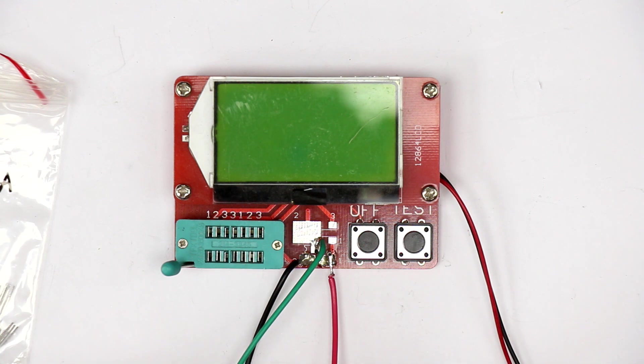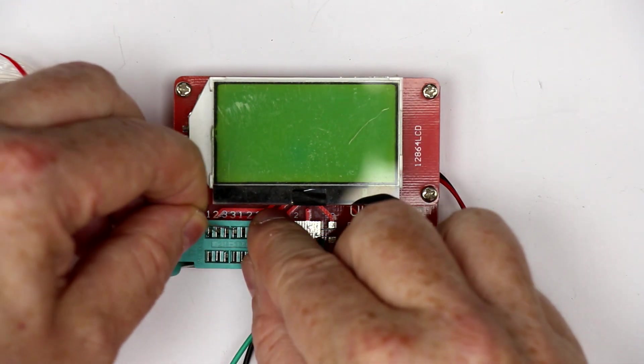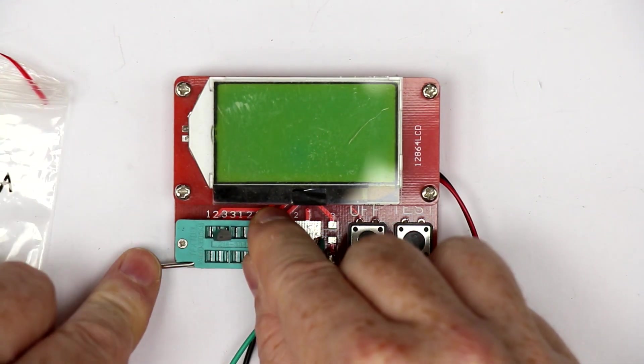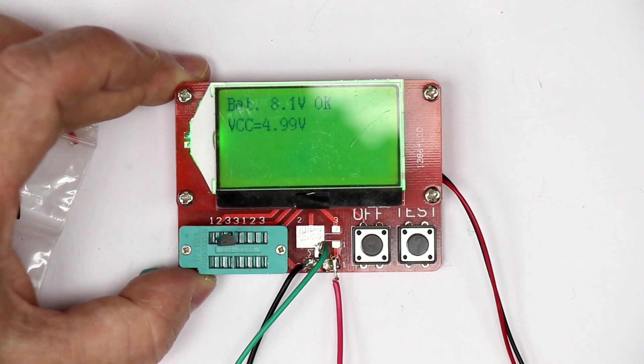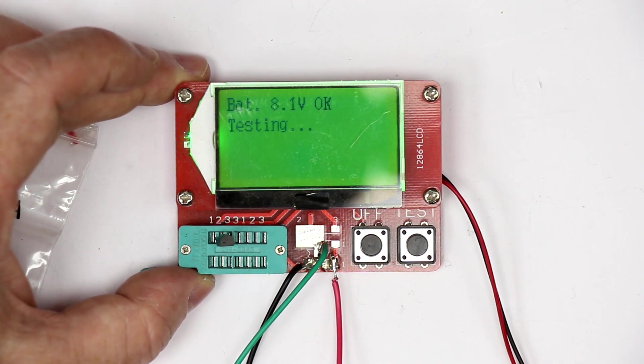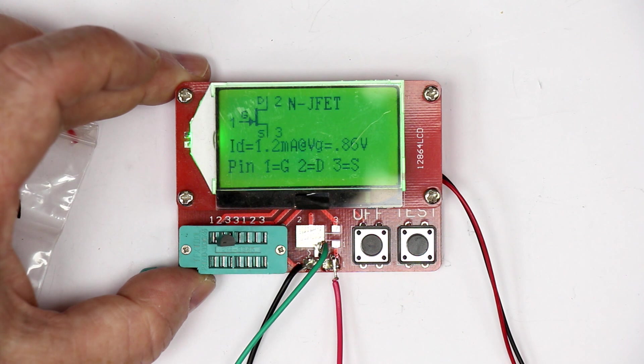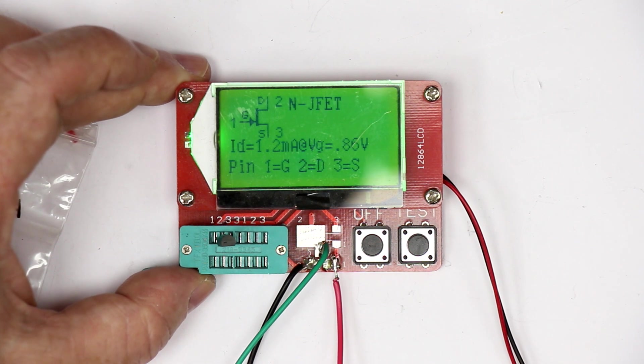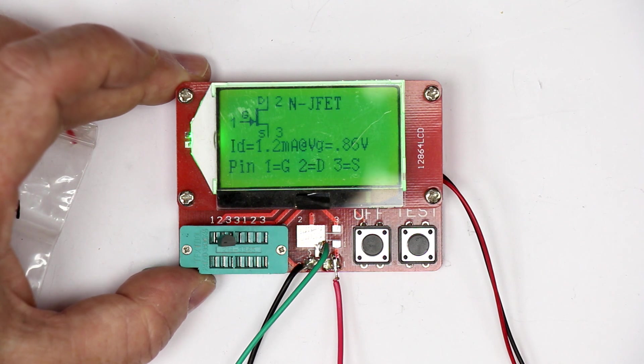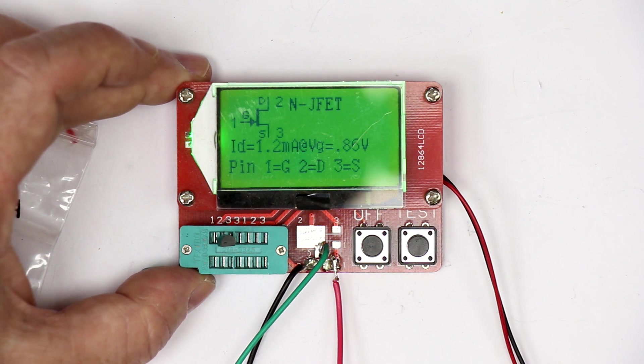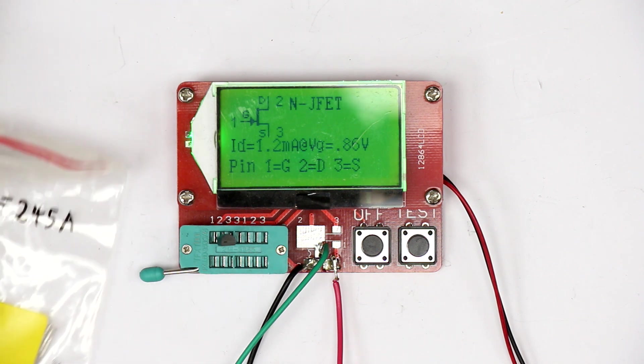Let's compare this with one from my personal stock of hopefully genuine BF245A and see what our component tester tells us. N-channel JFET. Here you can see the gate voltage here was only 0.86 volts and there we already have 1.2 milliamps.